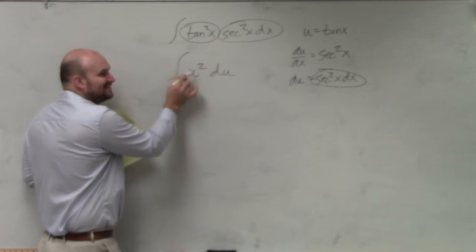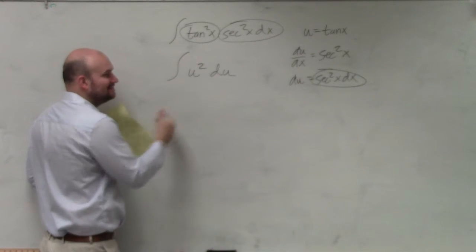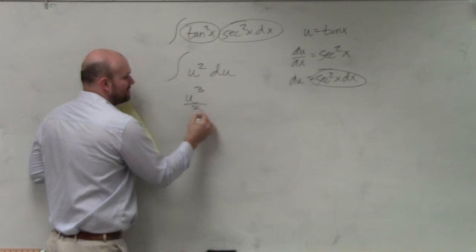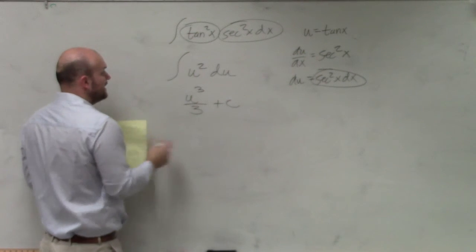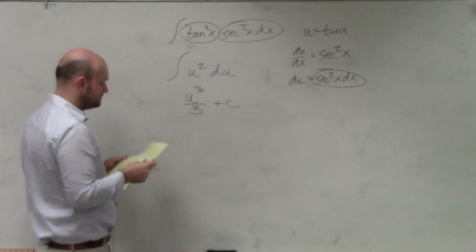So we have the integral of u squared du. Now we're just going to integrate: u cubed divided by 3 plus c. And then we plug our integral back in.